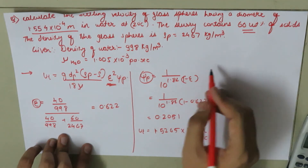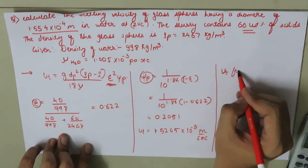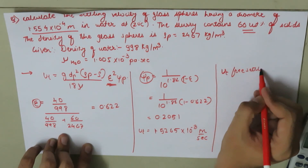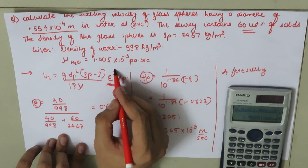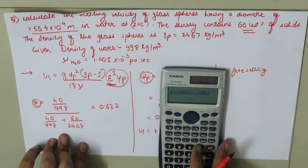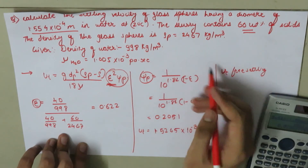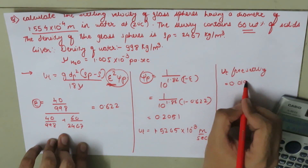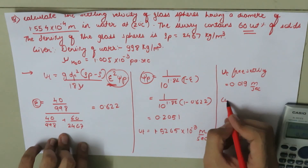If we calculate the free settling velocity by neglecting the epsilon² and psi_P correction terms, the answer is 0.019 meters per second. So the final conclusion is that the hindered settling velocity is less than the velocity calculated by Stokes' law. Thank you for watching this video.